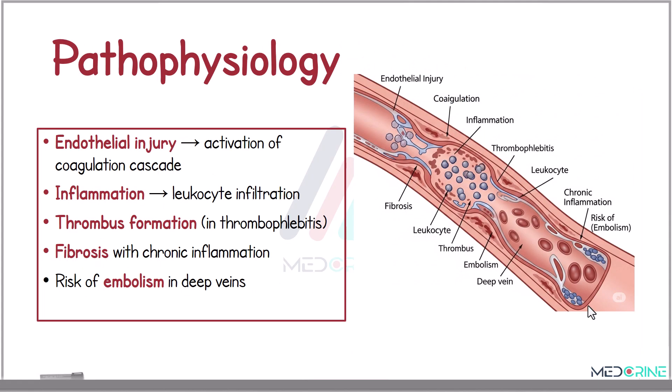In the pathophysiology of phlebitis, phlebitis begins with an endothelial injury triggering the coagulation cascade. This leads to inflammation and infiltration by white blood cells, followed by thrombus formation. Chronic inflammation may lead to fibrosis, and in deep vein involvement there is a significant risk of embolism.